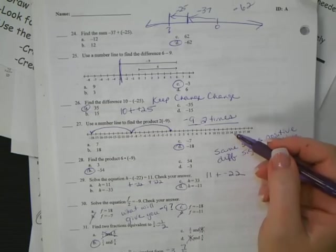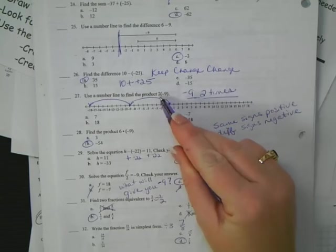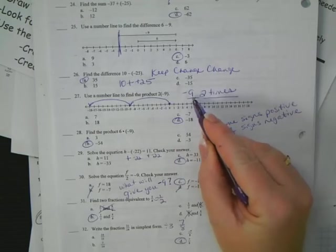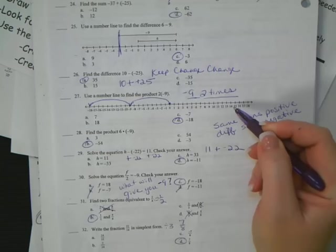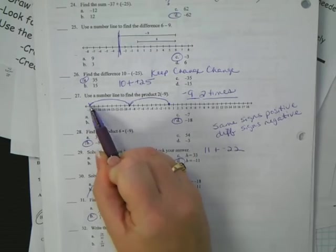Number 29. I have H minus a negative 22 equals 11. I want to get the H by itself. So I need to undo minus negative 22. So I do the opposite. Add negative 22 to both sides. And I end up with a negative 11.